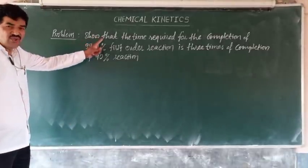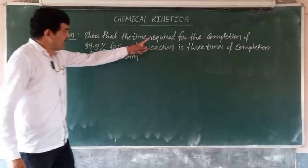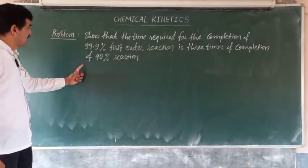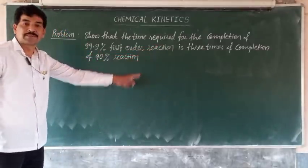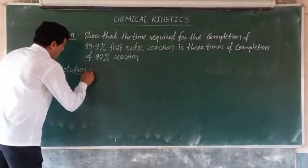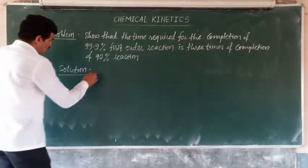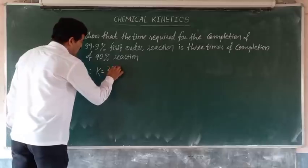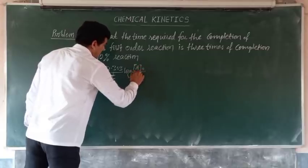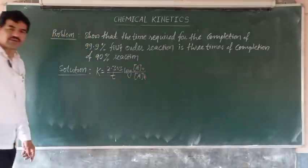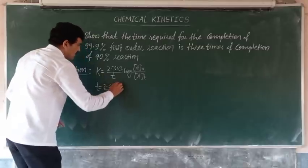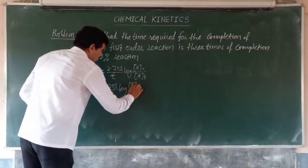Now we have a problem: we have to show that for a first order reaction, the time required for 99.9% completion is three times the time required for 90% completion. For a first order reaction, the integrated rate law is: k = (2.303 / t) × log(A0 / At), which can be rearranged to: t = (2.303 / k) × log(A0 / At).